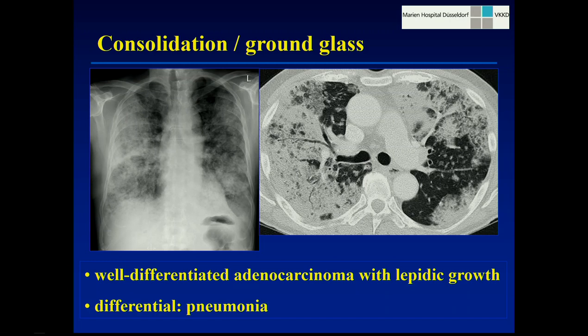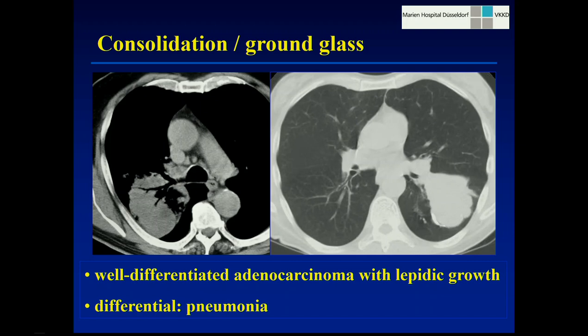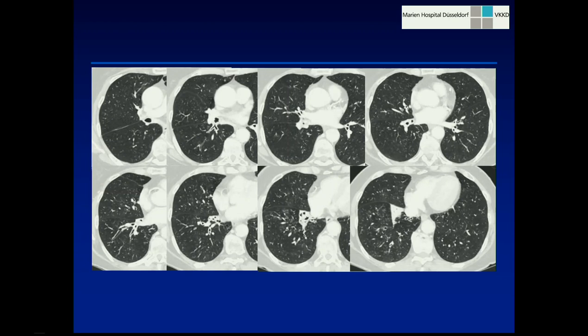Here's another case with appearances on the plain film and even the CT scan compatible with pneumonia. The clue often is that the clinical signs don't fit — the patient has no high fever, and it's a slow process. The drawback is these patients are often non-smokers. Particularly in women, lepidic growth adenocarcinoma occurs in non-smokers. Here are two more patients with rather pneumonia-like infiltration-like areas of consolidation representing adenocarcinoma with lepidic growth.